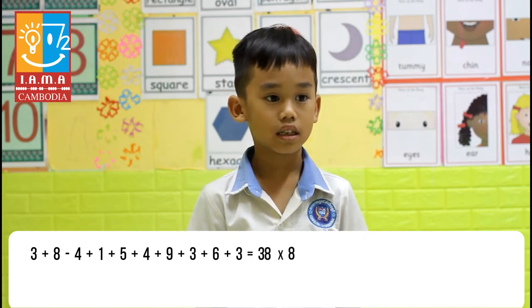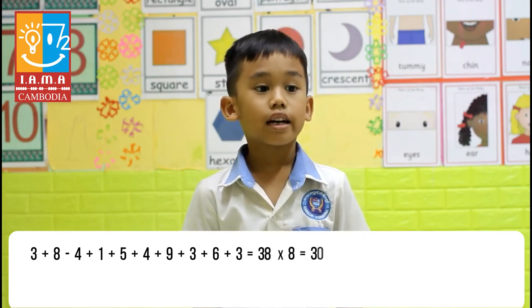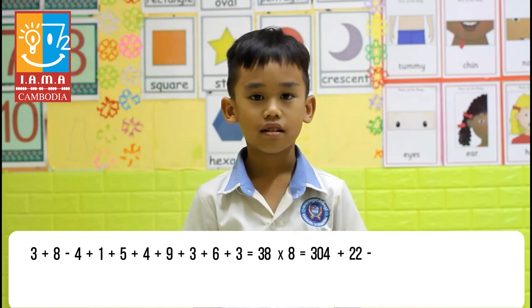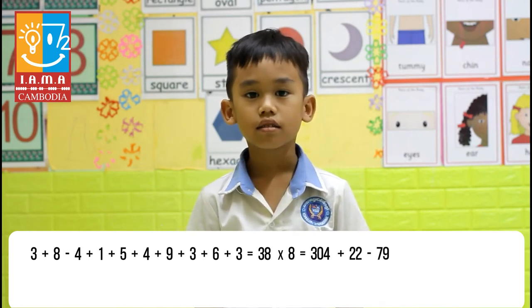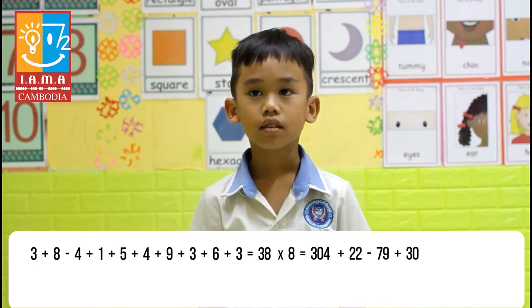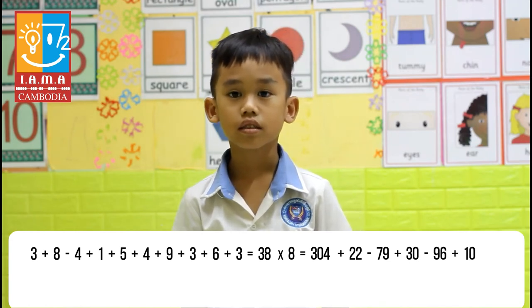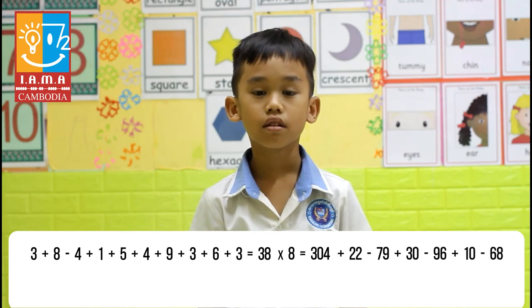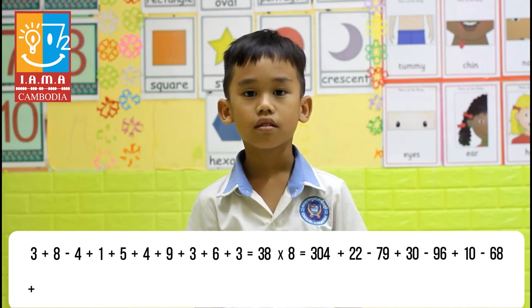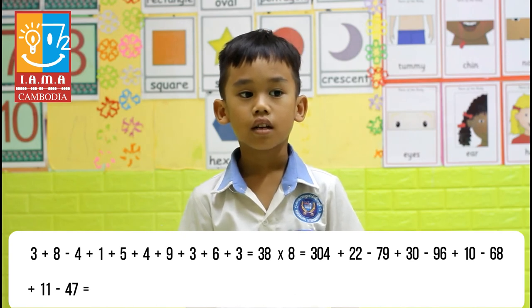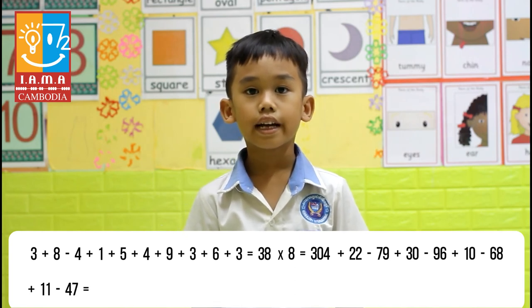Multiply by 8. Plus 22 minus 79 plus 30 minus 96 plus 10 minus 68 plus 11 minus 47. What is the answer? 87.